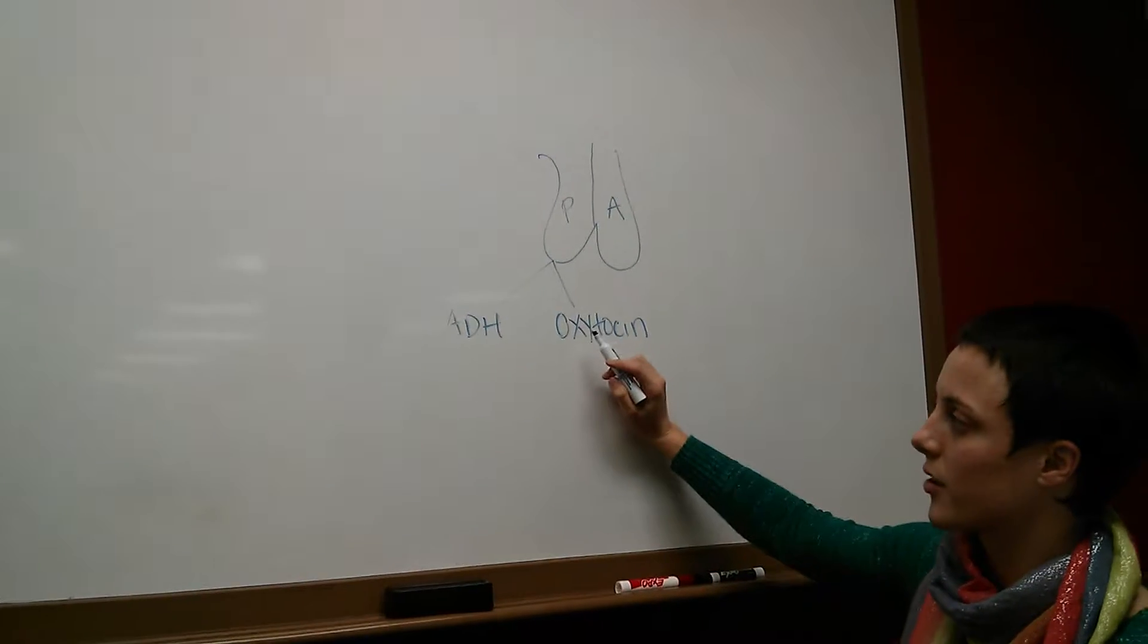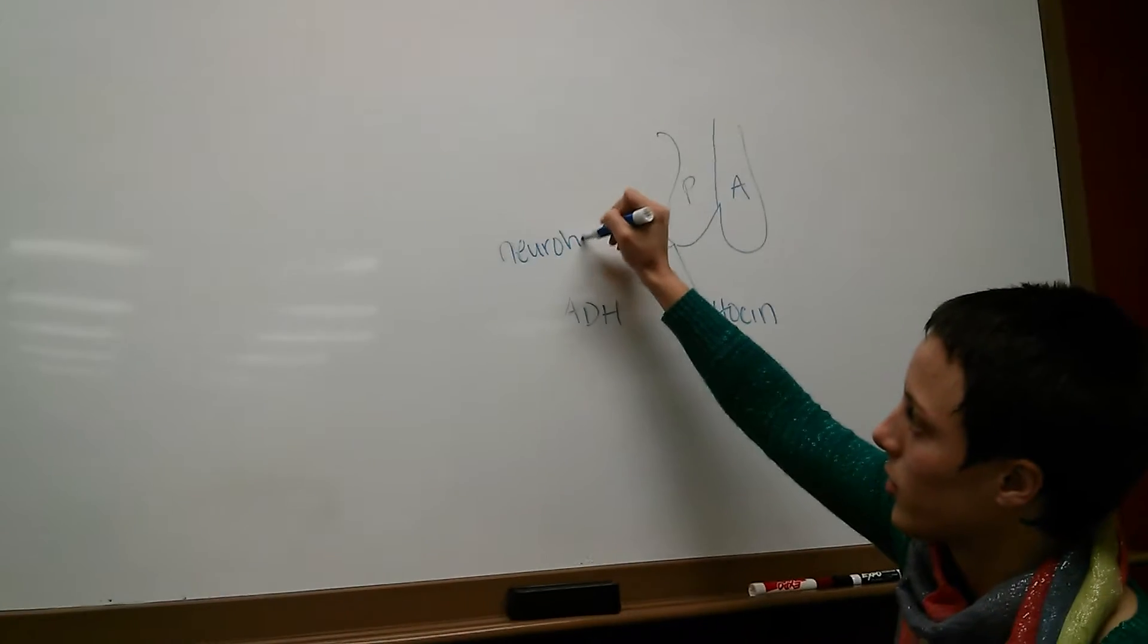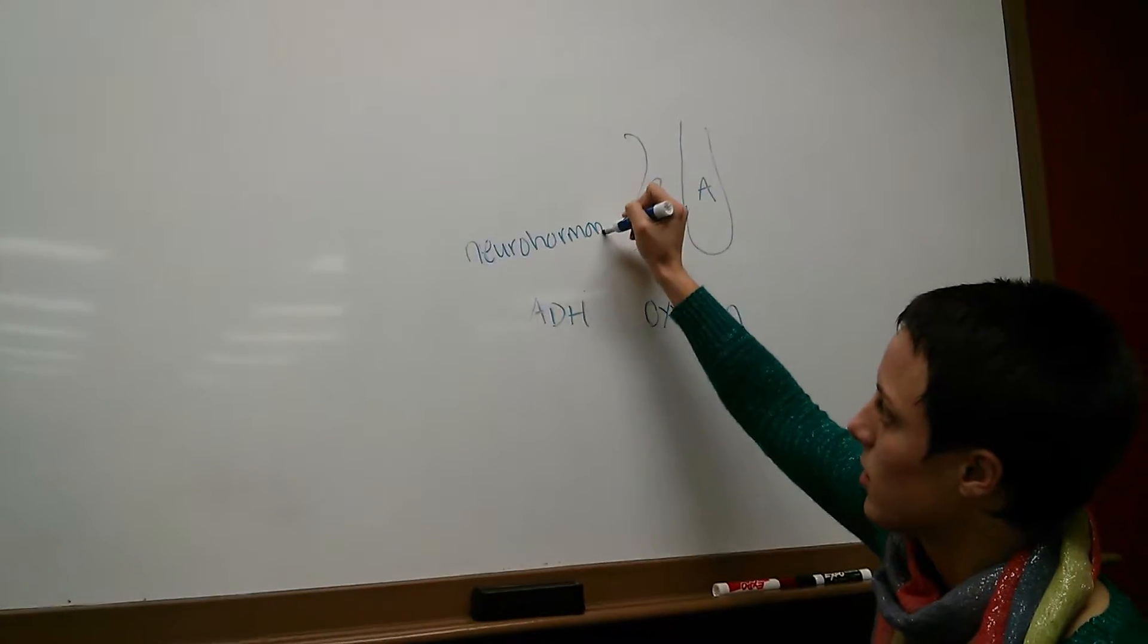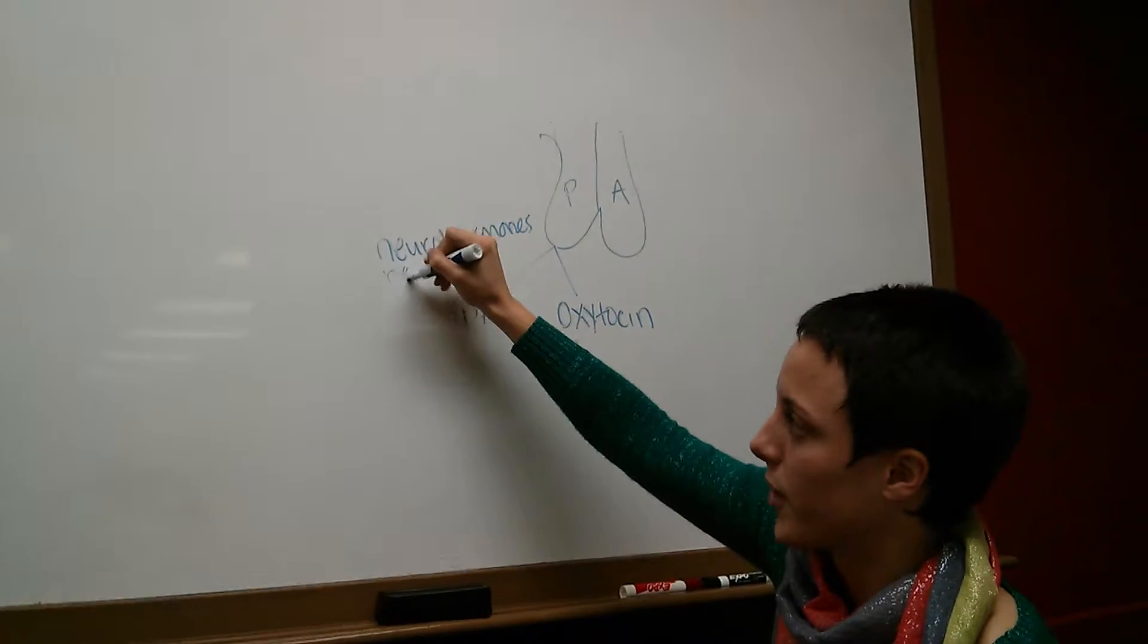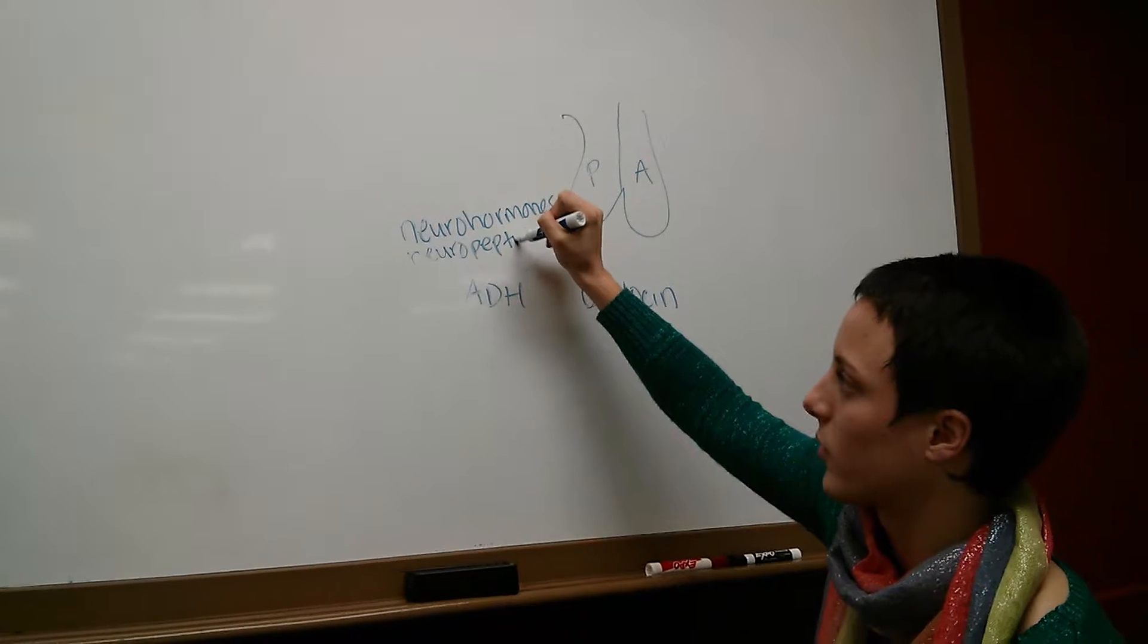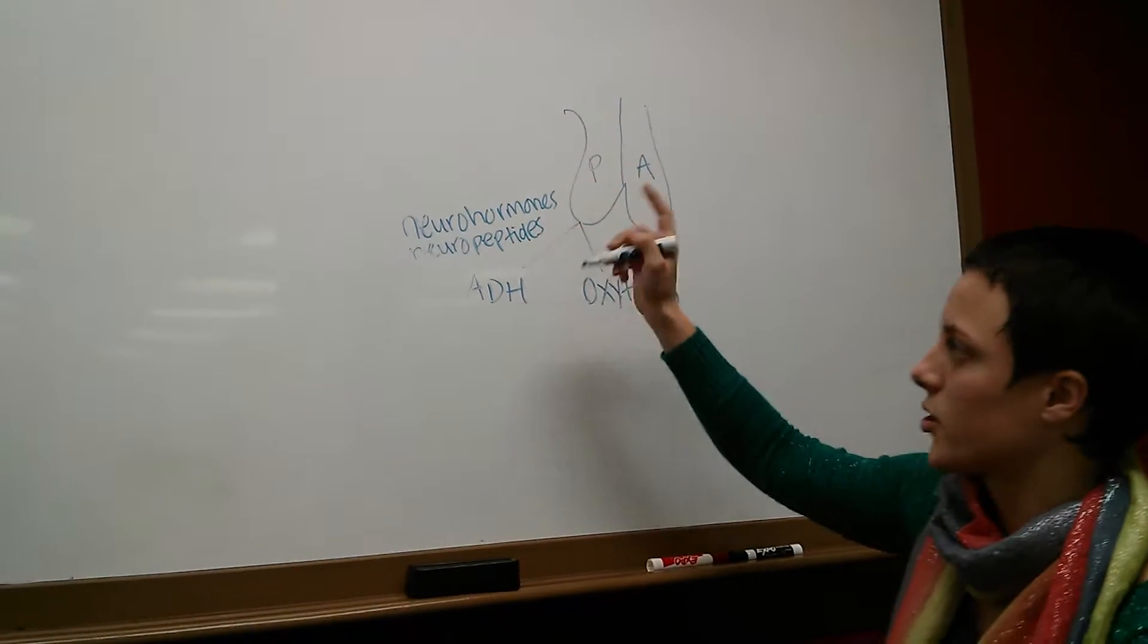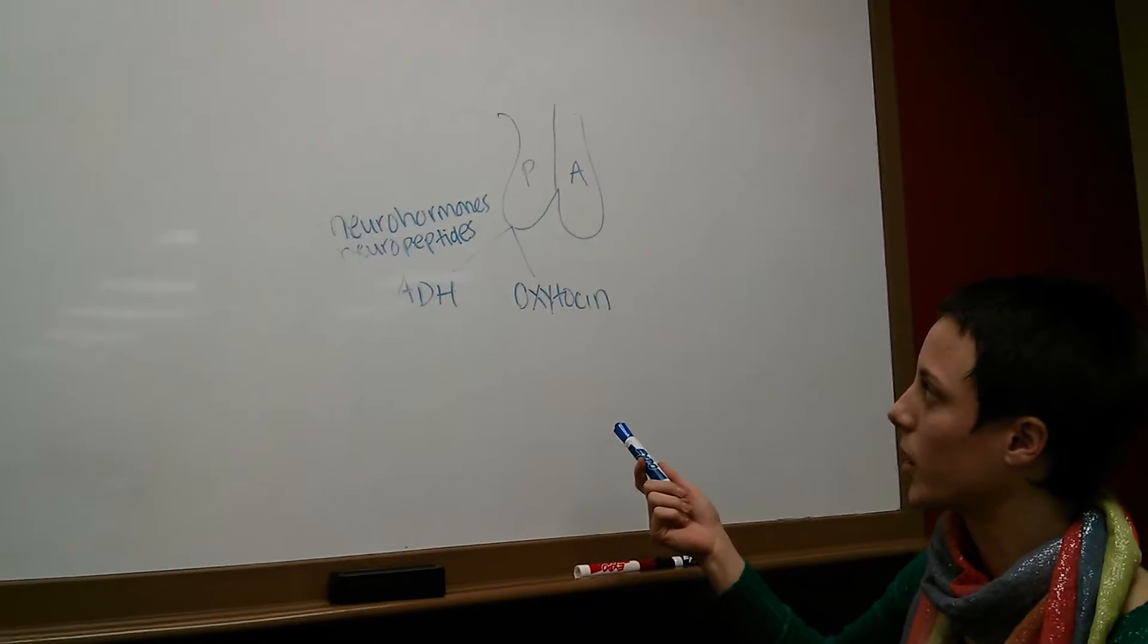Now, these are considered neurohormones. Neurohormones or neuropeptides - it's the same thing with just a different name. A lot of things in A&P have one or more different names. So neuropeptides and neurohormones are the same thing. Now, this term can confuse some people, so I'm going to explain real quick.